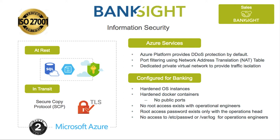In transit, BankSite uses secure copy protocol for CSVs and TLS for HTTP access. PII information is redacted in log files. The firewall limits access to connections originating from within Azure. Authentication is handled through OAuth 2. BankSite leverages the latest in Microsoft Azure operational security and has additionally configured it for banking industry standards, including secure hardening of all Docker containers.